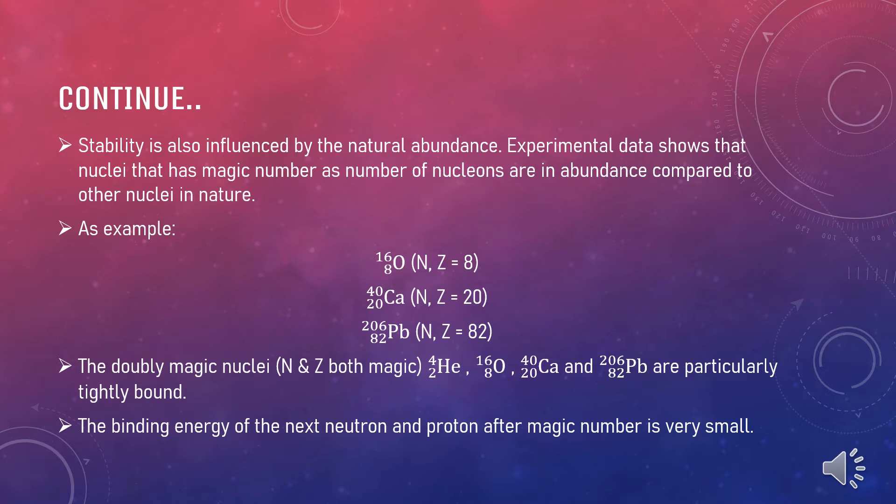The doubly magic nuclei where both N and Z are magic numbers like helium, oxygen, calcium, and plumbum are particularly tightly bound. The binding energy of the next neutron and proton after magic number will be very small.